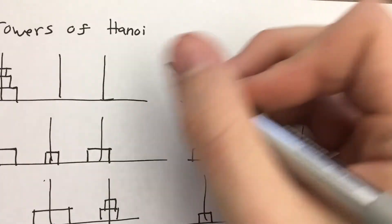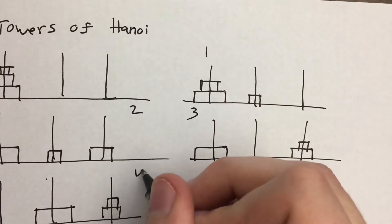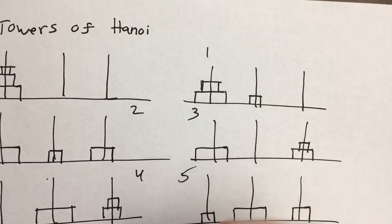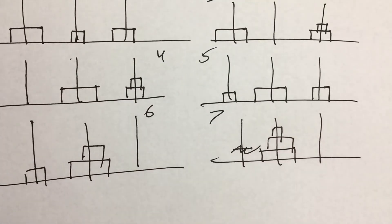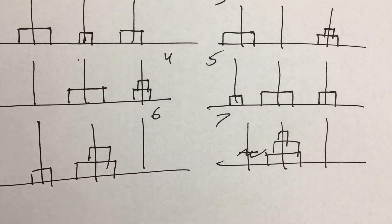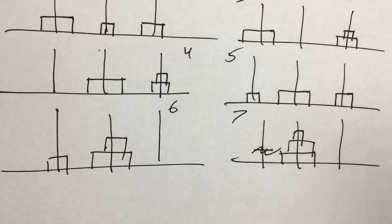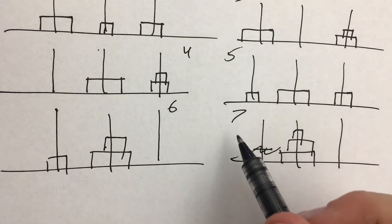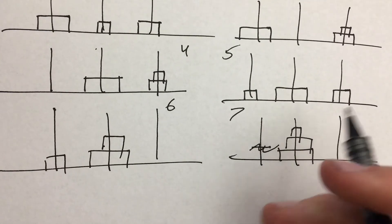That took us — if this is move one, two, three, four, five, six, seven — that took us seven moves. So we want to write a recurrence relation that will tell us how many moves it should take for four discs, based on how many moves three discs took.